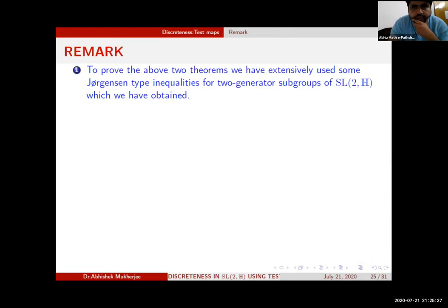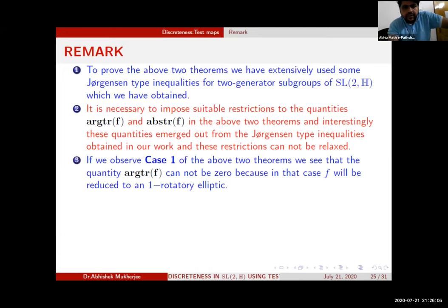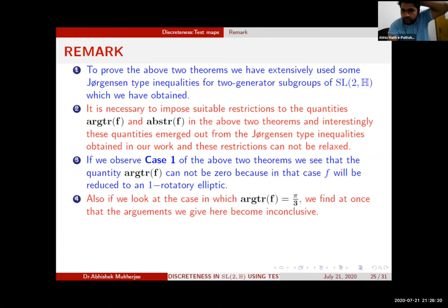I would like to make two or three remarks. To prove the above two theorems we have used Jørgensen type inequalities for two-generator subgroups of SL(2,H) which we have obtained. The second remark is that it is necessary to impose suitable restrictions to the quantities arg(tr(f)) and |tr(f)| in the above two theorems. Interestingly, these quantities emerged from the Jørgensen type inequalities obtained in our first work, and these restrictions cannot be relaxed. The third remark is that if we observe Case 1 of the above two theorems, we see that the quantity arg(tr(f)) cannot be zero because in that case f will be reduced to a 1-rotatory elliptic.